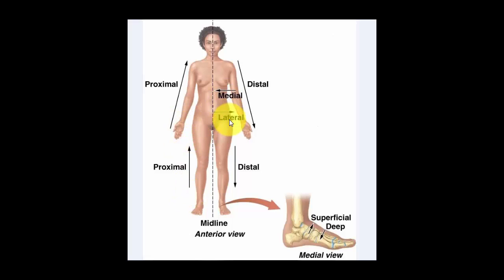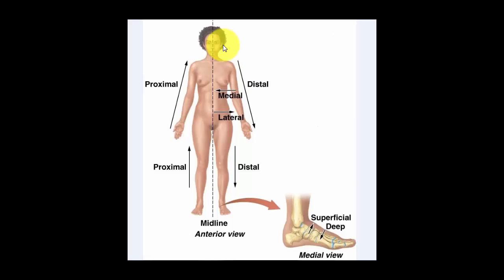The terms medial and lateral refer to different areas of the body, especially the abdomen. Medial means closer to the midline. Lateral refers to further from the midline. Any anatomical structure closest to this line is referred to as medial, and lateral is further away. For example, the ears are lateral to the nose because the ear is further from this imaginary midline. The nose is medial to the ears because it is closer to the midline.